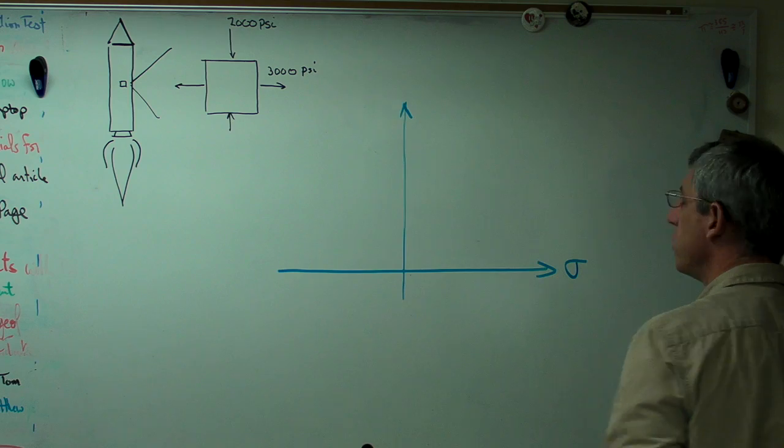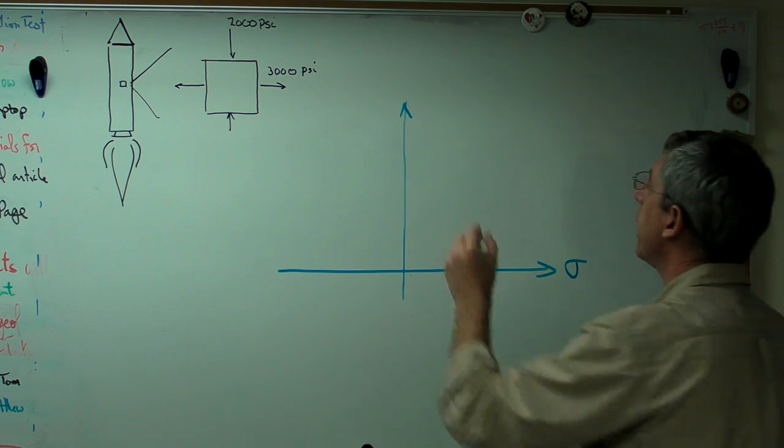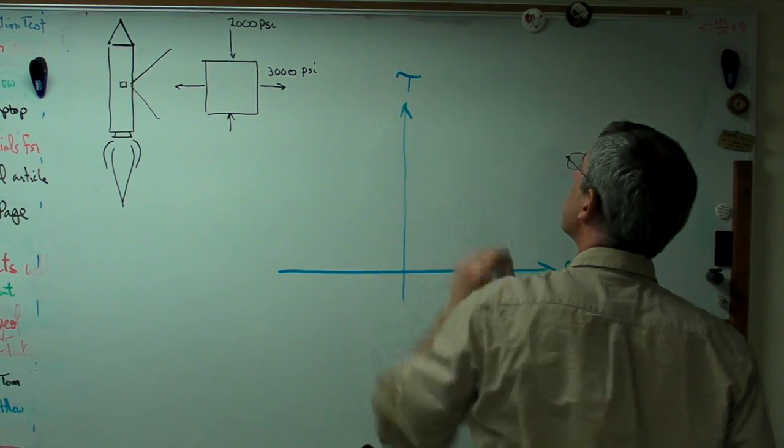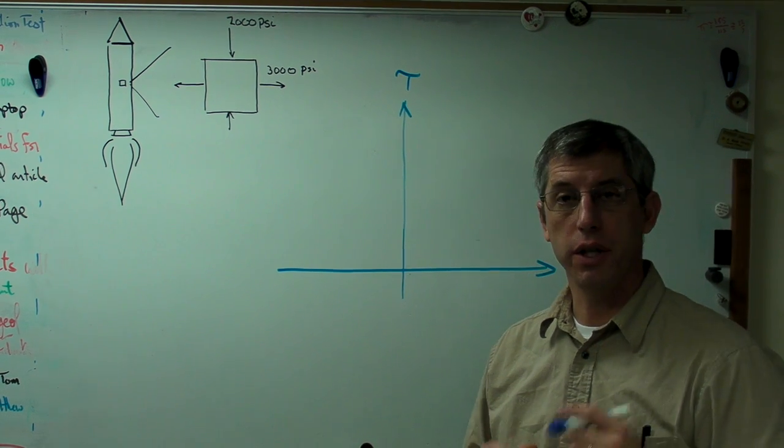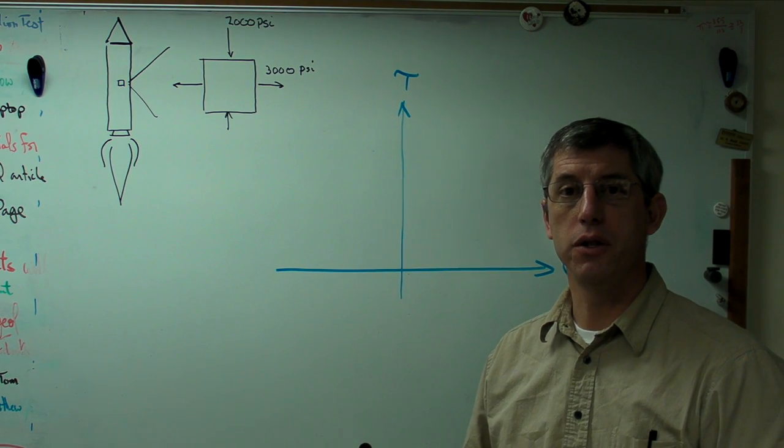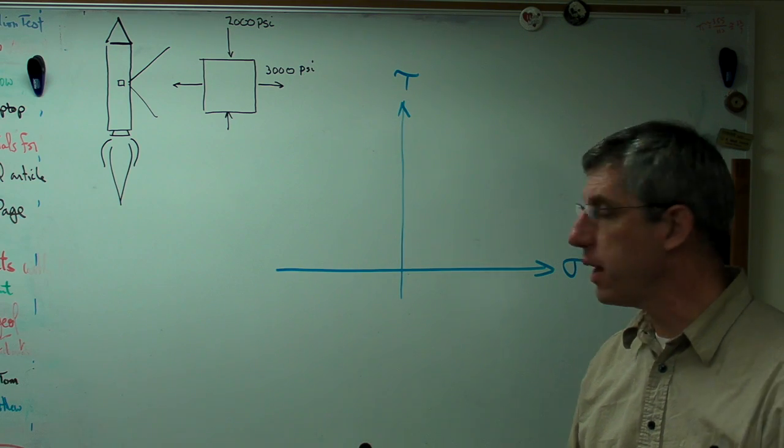So you plot normal stress, sigma, on the horizontal axis and shear stress, tau, on the vertical axis. So these don't have direct geometric meaning. These are stress axes.